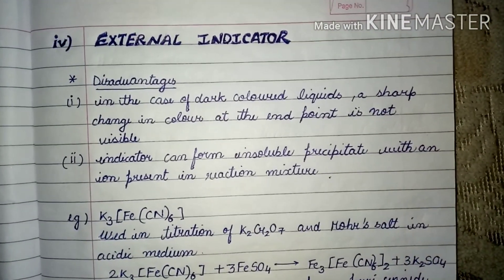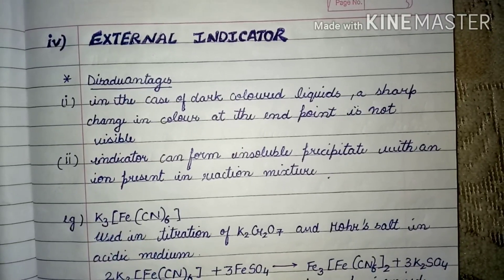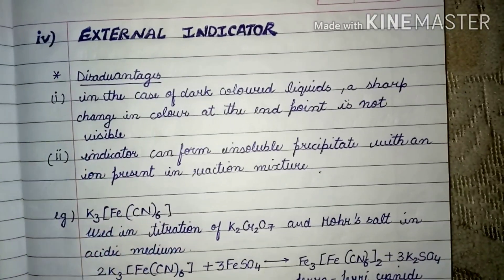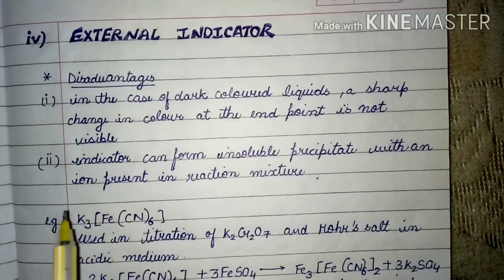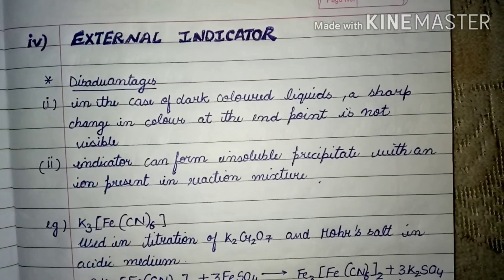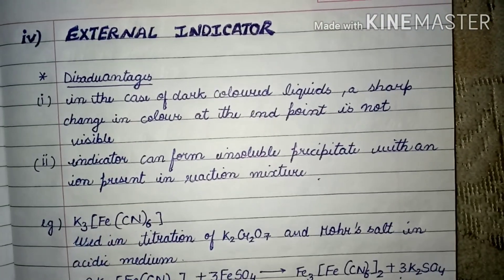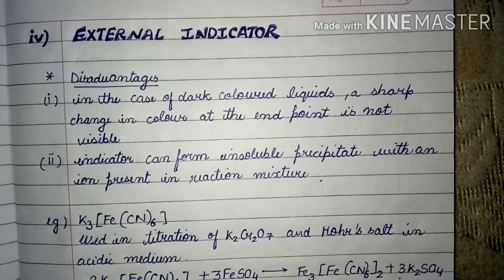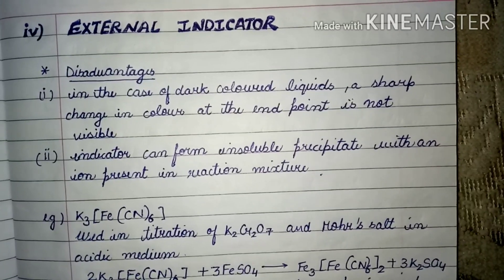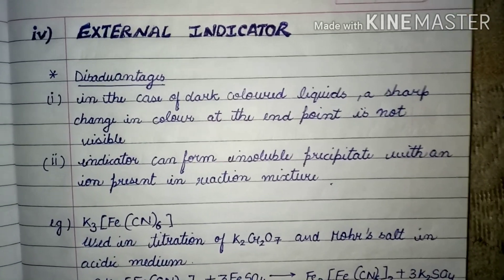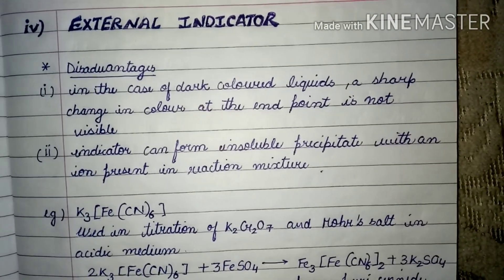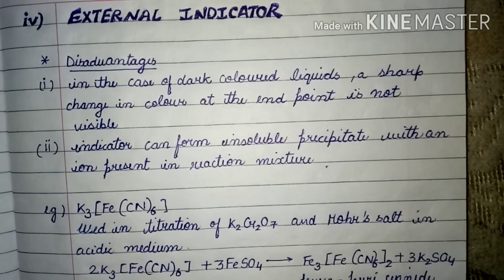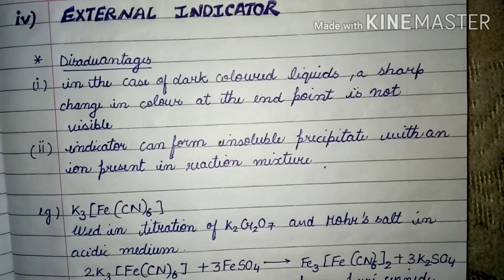The last type of indicator is the external indicator, which we use rarely in redox titration because of some disadvantages. The first disadvantage is that in the case of dark-colored liquids, a sharp change in color at the endpoint is not visible. If the reaction medium has a dark color, the indicator will be of no use there because the reaction medium color dominates over the indicator color, leading to wrong detection of the endpoint.